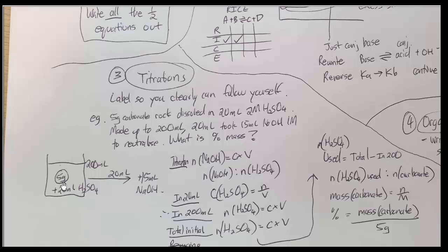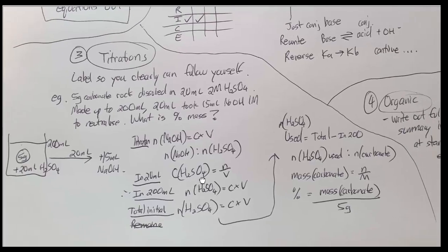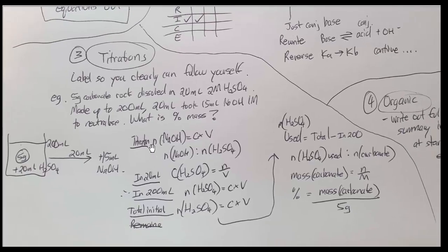So this one here you really got to process the question. Okay so five grams which took this much acid dissolve it was made up to 200 mils. We took 20 mils of that out. It took 15 mils of that to neutralize it. So you need to label it clearly so you can follow yourself and get the marks and if you get it wrong get part marks.